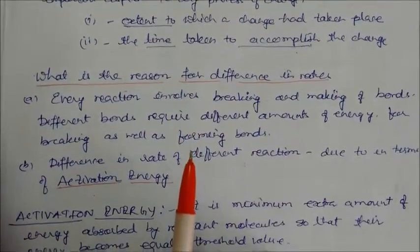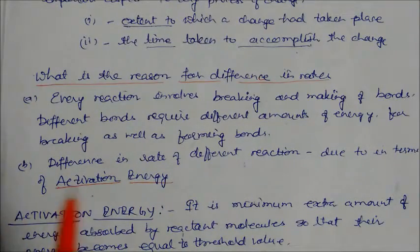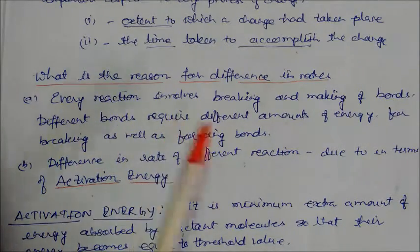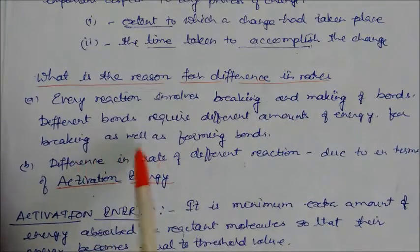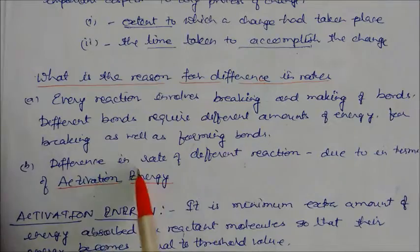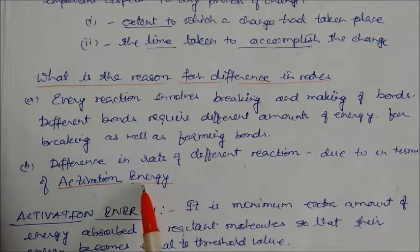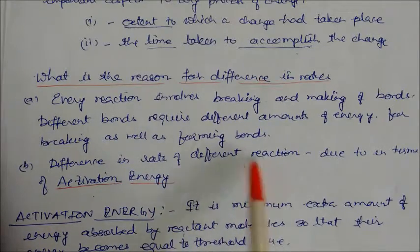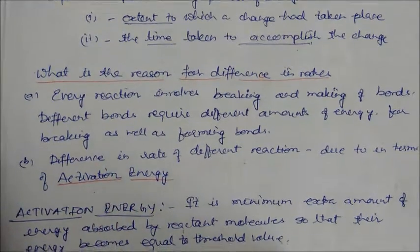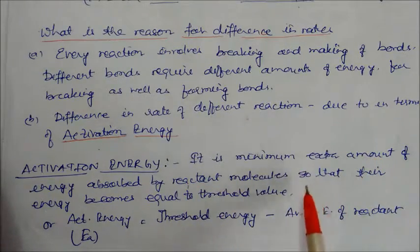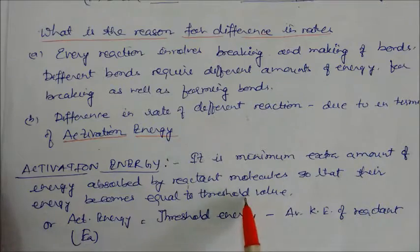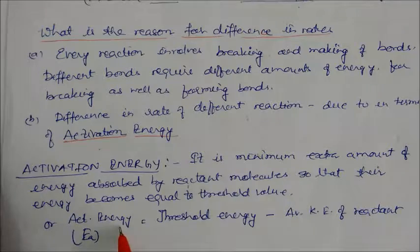Why is there a difference in rates? Why are some reactions fast and some slow? Every reaction involves breaking and making of bonds, and different bonds require different amounts of energy. Since bonds are different, the energies required for breaking and forming bonds are also different. The difference in rate of different reactions is due to activation energy. Activation energy is the minimum or extra amount of energy absorbed by the reactant molecule so that their energy becomes equal to the threshold value. Activation energy equals threshold energy minus average kinetic energy of the reactant.